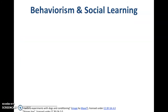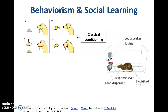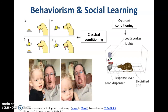Behaviorism and social learning are our first non-stage theories. If you've heard about Pavlov and his dogs — where he rang a bell and introduced food to create salivation in the dogs — that's classical conditioning. If you've heard about Skinner and his rats pushing levers to get treats, with reinforcement or punishment to encourage or discourage behavior, that's operant conditioning. Classical and operant conditioning are forms of behaviorism. Imitation and modeling — often connected with the theorist Bandura — that's social learning.